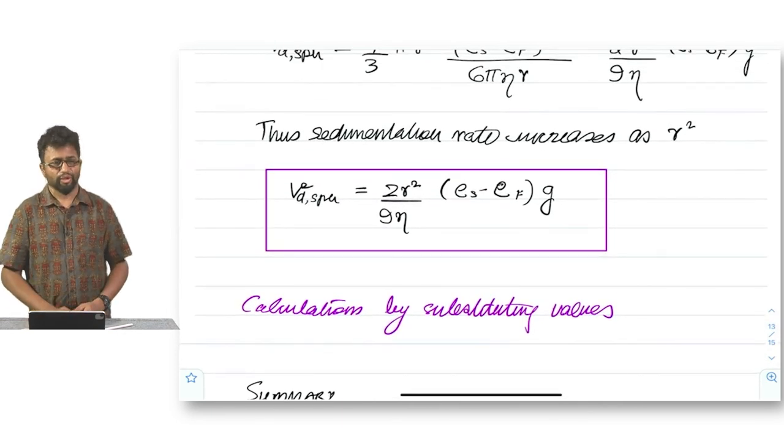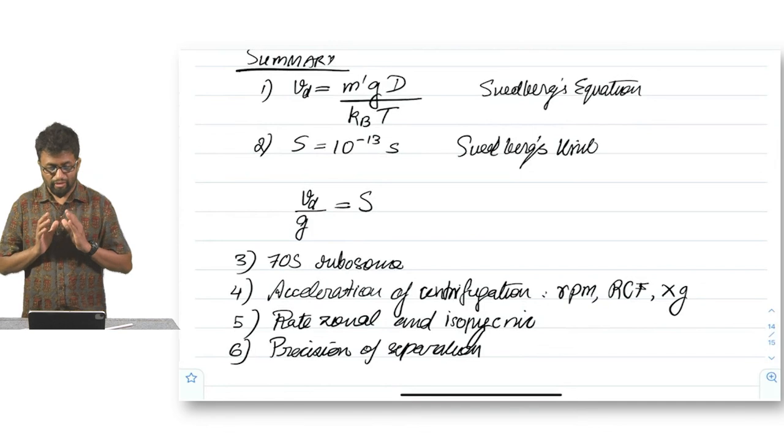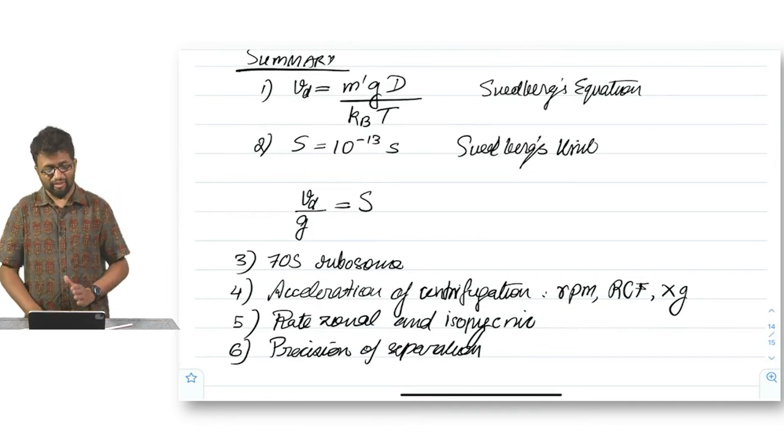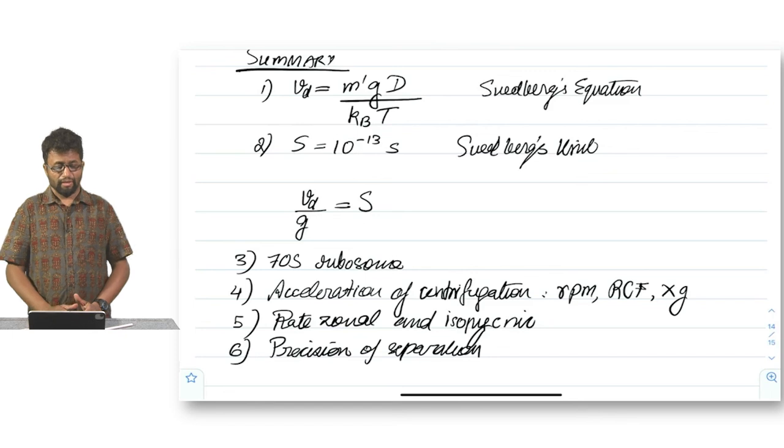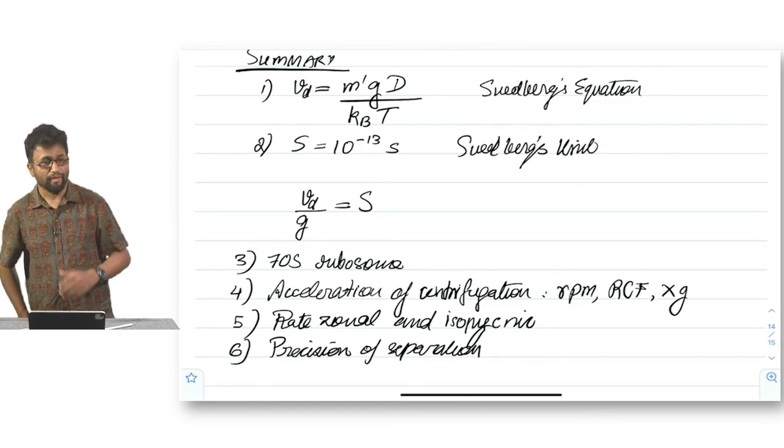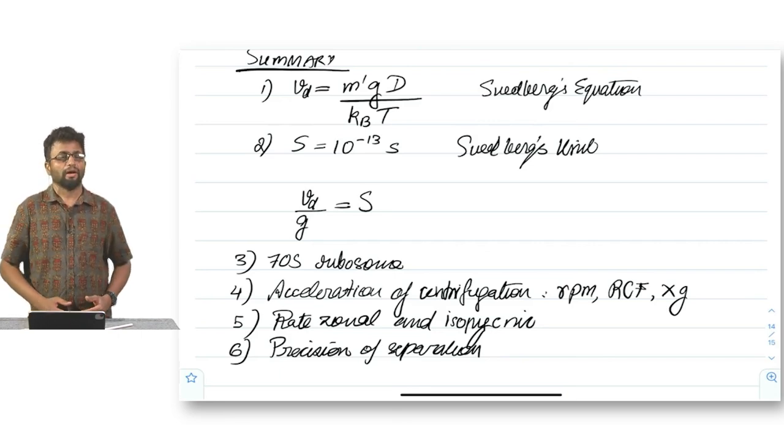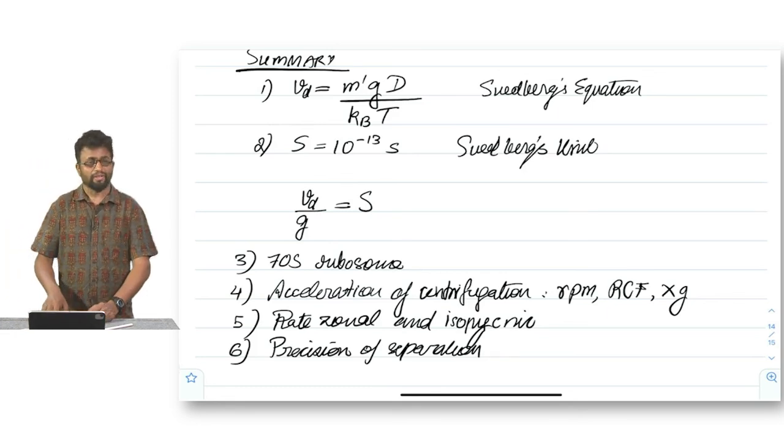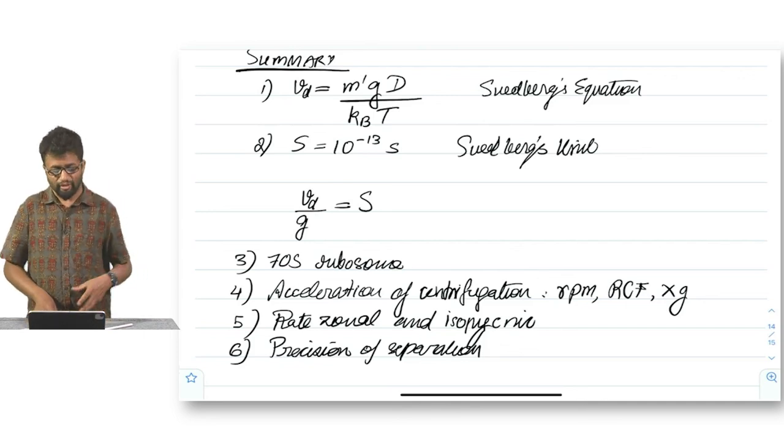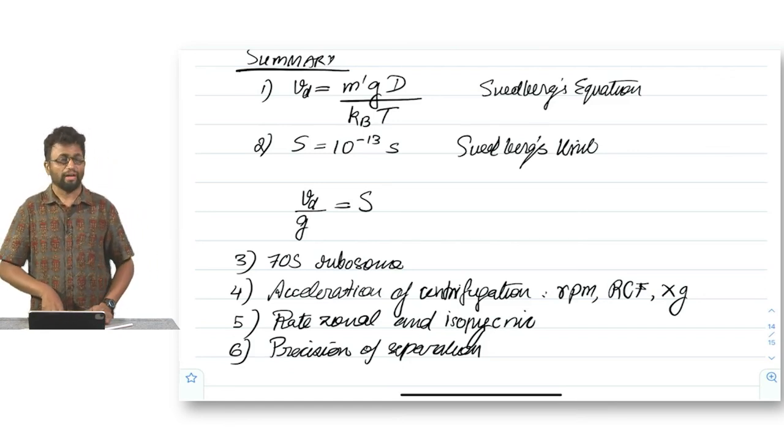So with that we end this segment on centrifugation and I am going to summarize what we have covered so far. So in summary, the downward velocity of centrifugation is equal to the effective velocity, effective mass into gravitational acceleration to diffusion coefficient upon kB T. This is Svedberg's equation. Svedberg's unit is S is equal to 10 to the power minus 13 seconds. This is by definition. Vd by g is S, which is the Svedberg symbol. The 70S ribosome is based on the speed at which it centrifuges in a certain gravitational acceleration. And the acceleration of the centrifugation, we said, can be used to infer interrelationships between RCF, RPM and how many g's. Rate zonal and isopycnic centrifugation are used differentially depending on whether we know the buoyancy or the density of the object. And we can also infer that we can improve the precision of separation through higher forces of centrifugation.